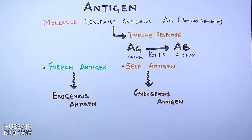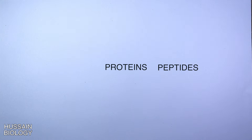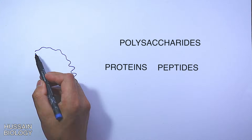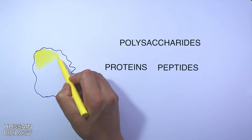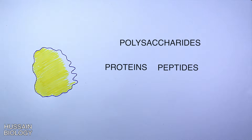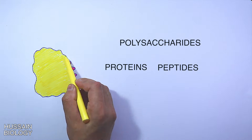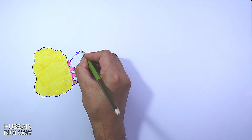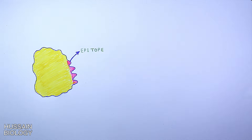Now let's look at the structure of an antigen. The antigen can be made up of proteins, peptides — that is amino acid chains — and polysaccharides. In this diagram we can see the antigen has one small region that defines its function and working, and that structure is called the epitope.